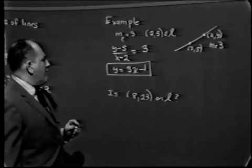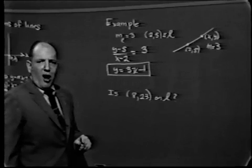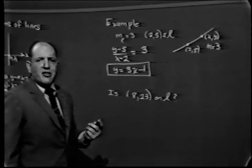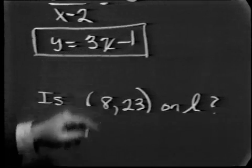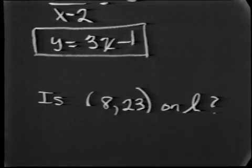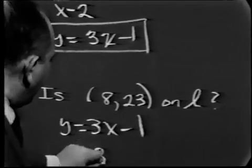For example, suppose a person says to me, I wonder if the point 8 comma 23 is on this line. I don't have to draw a picture to scale. I don't have to waste any time. I know that the equation of my line is y equals 3x minus 1. By the way, if y equals 3x minus 1, as soon as x is 8, what must y equal?